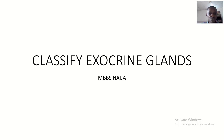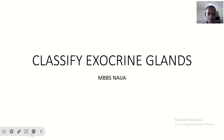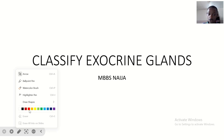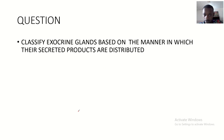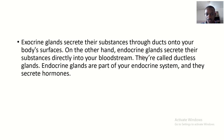Today we'll be classifying exocrine glands — that's apocrine, merocrine, and holocrine. We'll be classifying exocrine glands based on the manner in which their secreted products are distributed. Exocrine glands secrete their substances through ducts onto your body's surfaces.